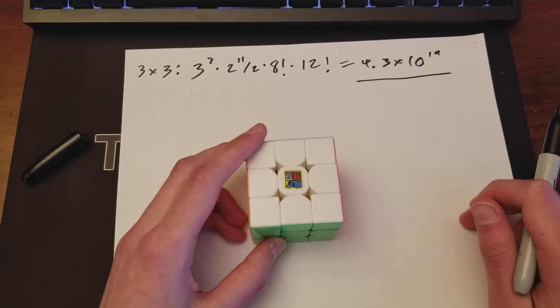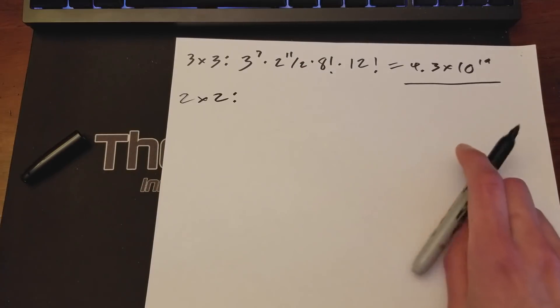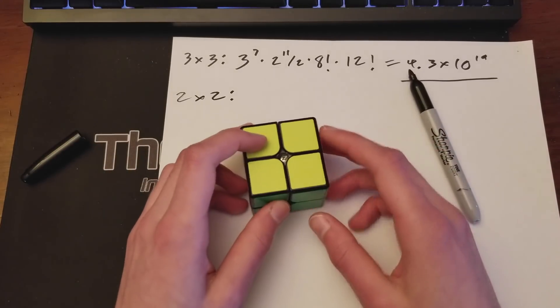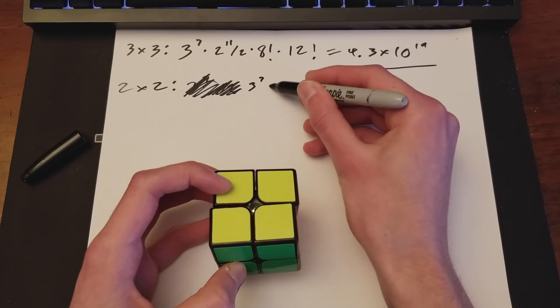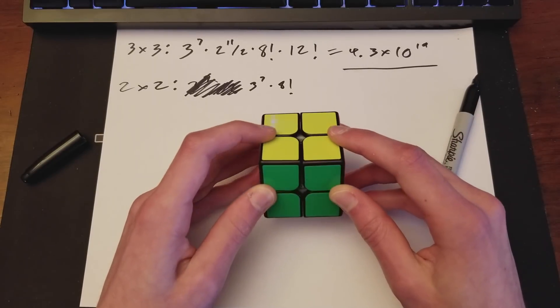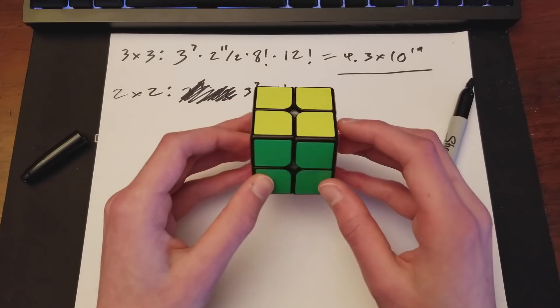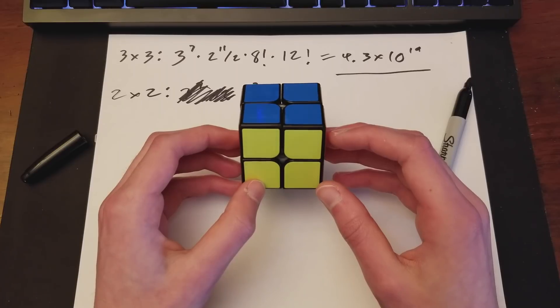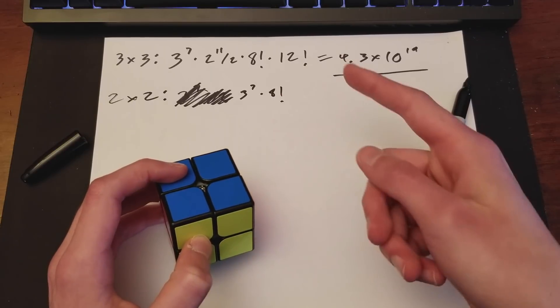Since you have fixed centers, the pieces can take any position. So you've got eight corners. It can take any of the eight positions. And then this could take any of the remaining seven. So the corners would be eight factorial. And then edges, same thing, times 12 factorial. And here you go. It's got 43 quintillion. So that's basically the 3x3s.